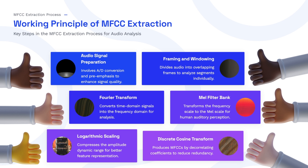The MFCC feature extraction process starts with audio signal preparation, which involves analog-to-digital conversion and pre-emphasis to enhance sound quality. Once we record any audio sample, we first remove the noise and silence from that sample, then normalize it so that we can get better signals when retrieving the MFCC features. After preparing the audio sample, it undergoes framing and windowing — we divide our audio into overlapping frames to analyze segments individually.